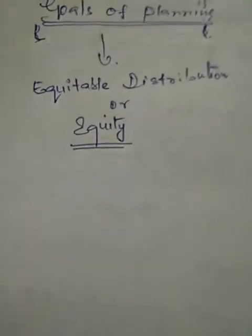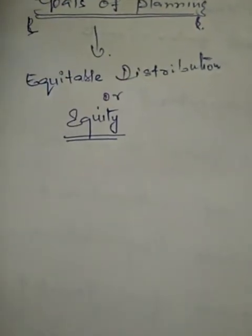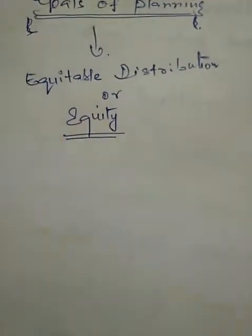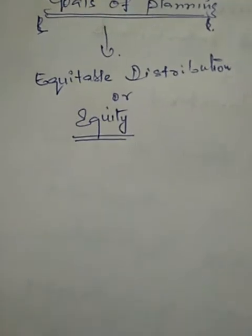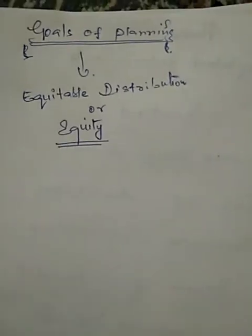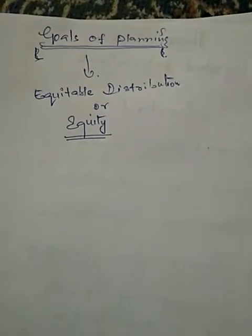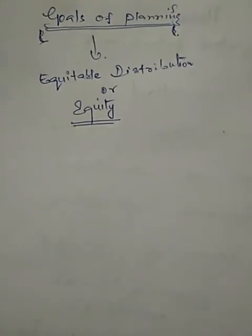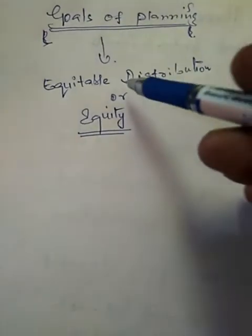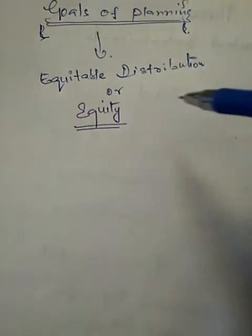As I said earlier, we discussed increase in GDP and per capita GDP - that's growth. Then we discussed full employment. Now let's move to another goal of planning in the form of equitable distribution or equity.